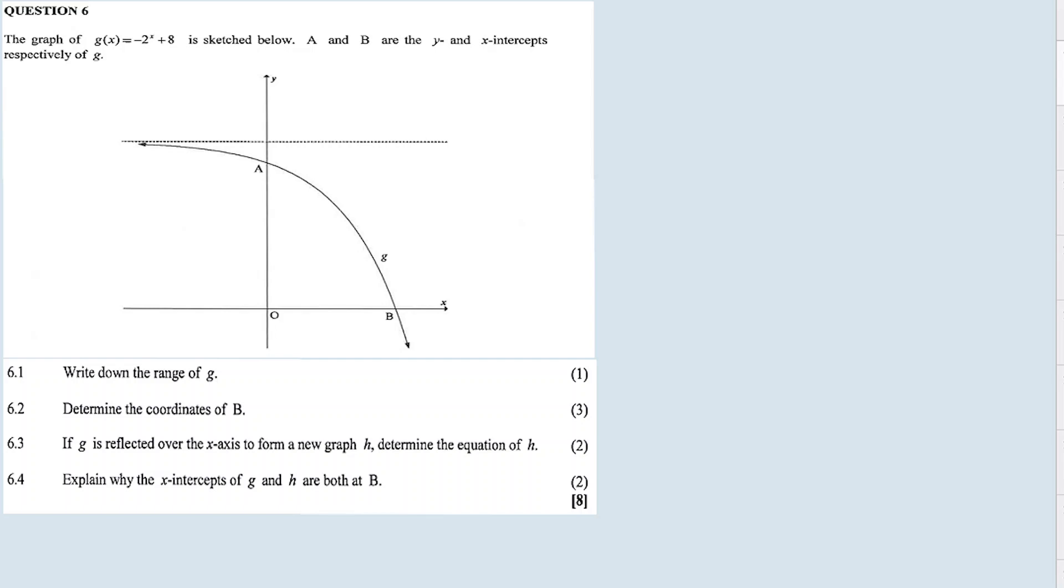Now, the graph of G is equal to minus 2 to the exponent X plus 8 is sketched below. A and B are the Y and X intercepts respectively of G. This is an exponential function. So we have to answer my questions around the line. Now, 6.1, write down the range of G.